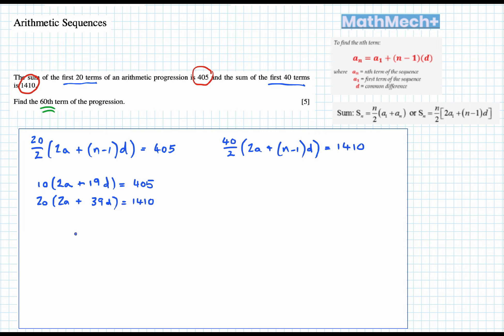Now we need to simplify down more. So 10 times 2 is 20a plus 190d equals 405. Excellent. And the same for our second progression, 20a plus 780d equals 1410.